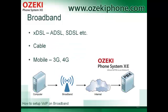A broadband Internet connection can provide high-speed Internet access. It can be any type of DSL connection. For example, ADSL is an asymmetric type, meaning that the download speed is higher than the upload speed. SDSL is another type of DSL that has the same bandwidth for both download and upload. DSL connections are provided over a phone line.